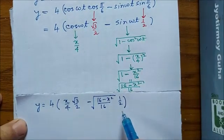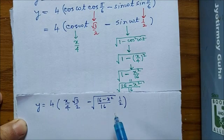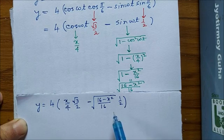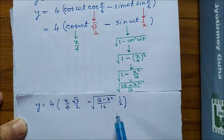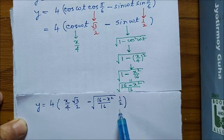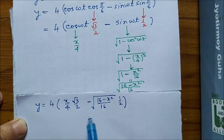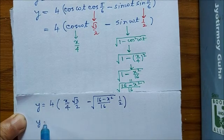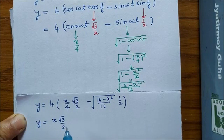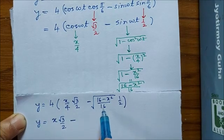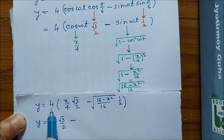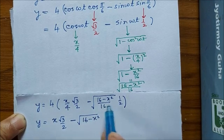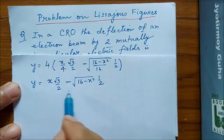So we have obtained an equation that connects y and x which describes the resultant motion, which defines the path followed by the electron. We have to find the nature of the path that this equation represents. So let us simplify this further. 4 and 4 will cancel out, so the first term is x√3 by 2. In the second term, √16 is 4 which will be cancelled by this 4, and we are left with √(16 - x²), and this half is staying there.